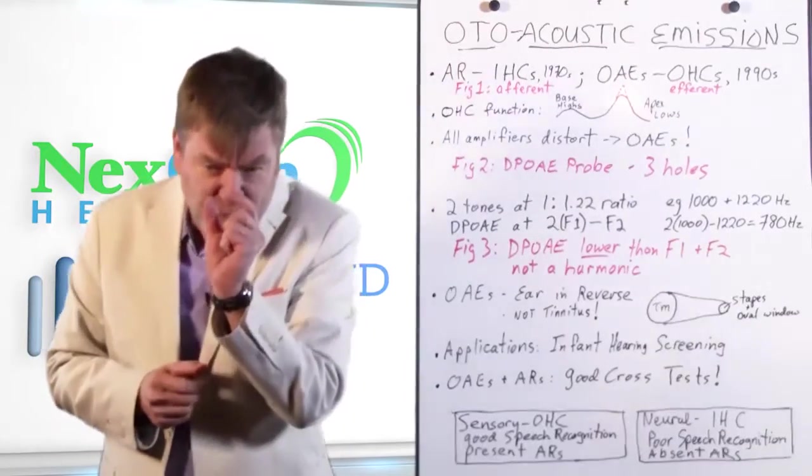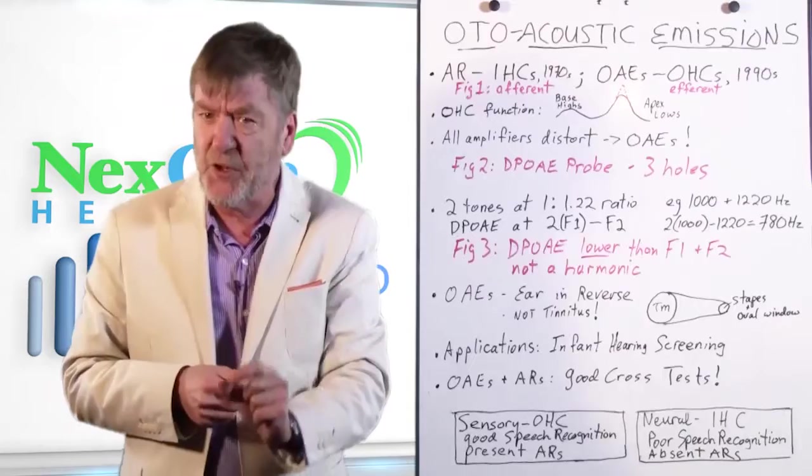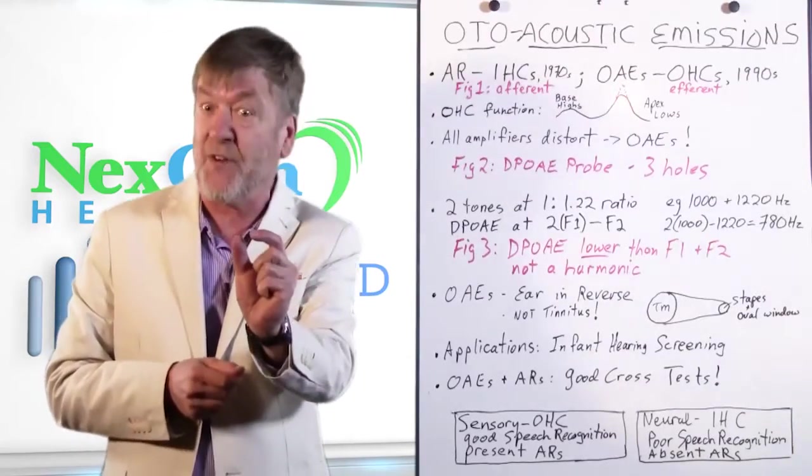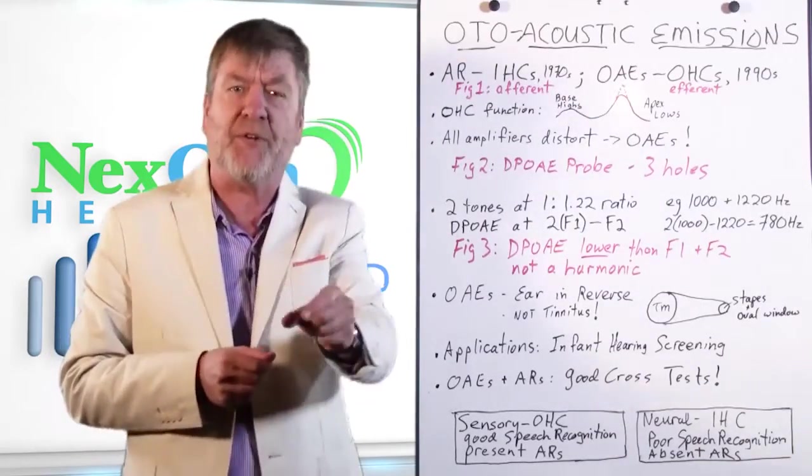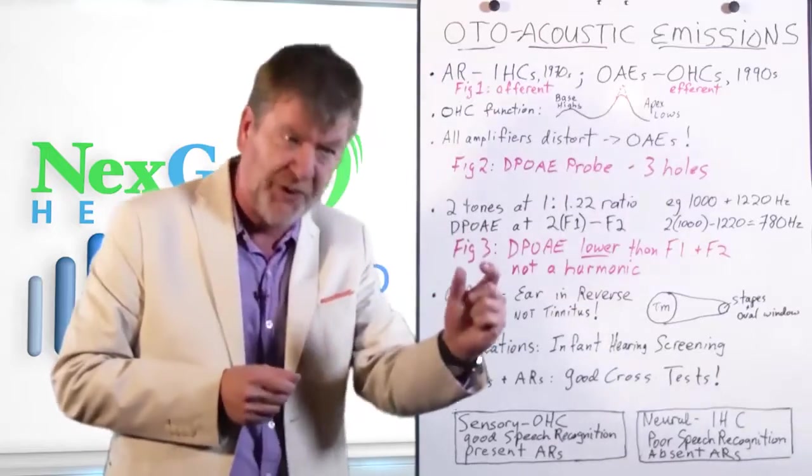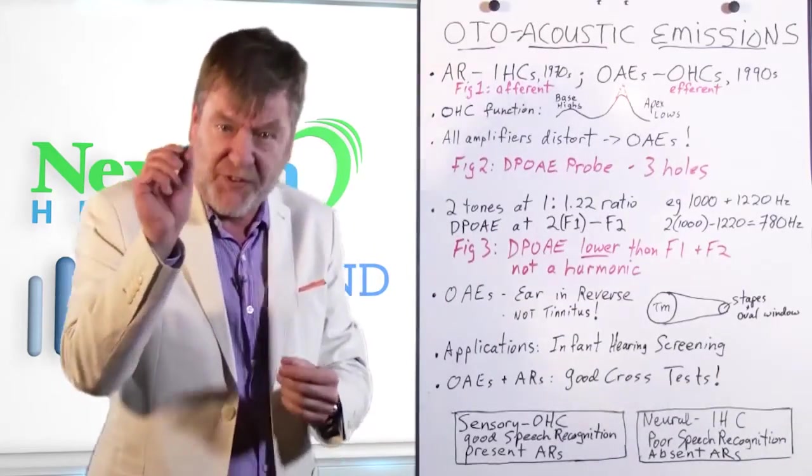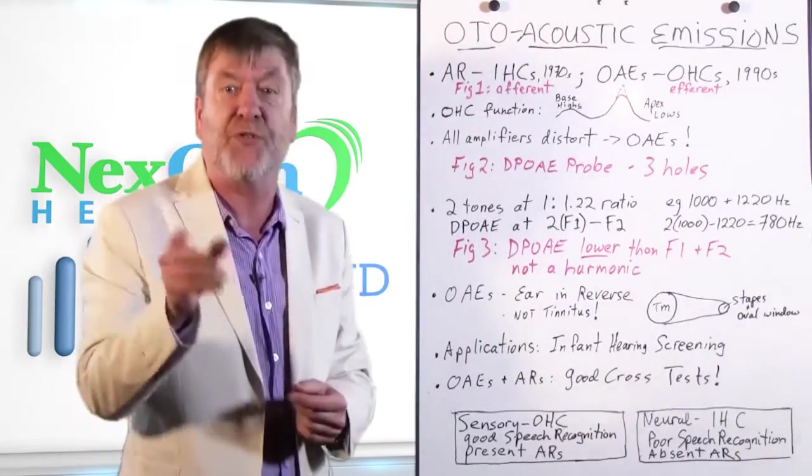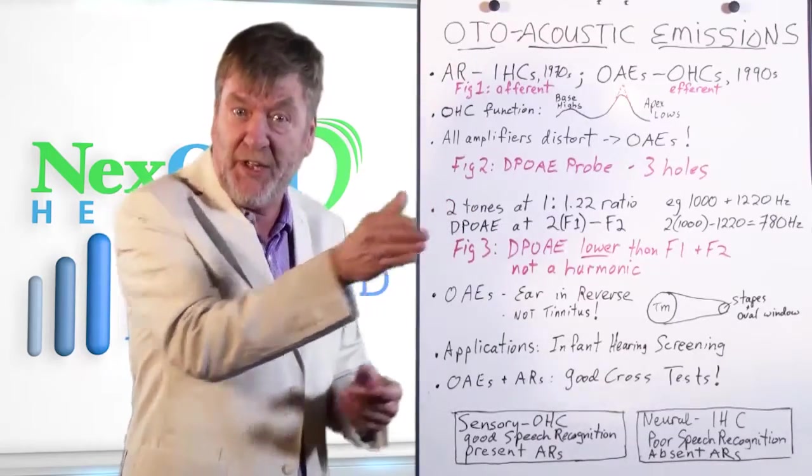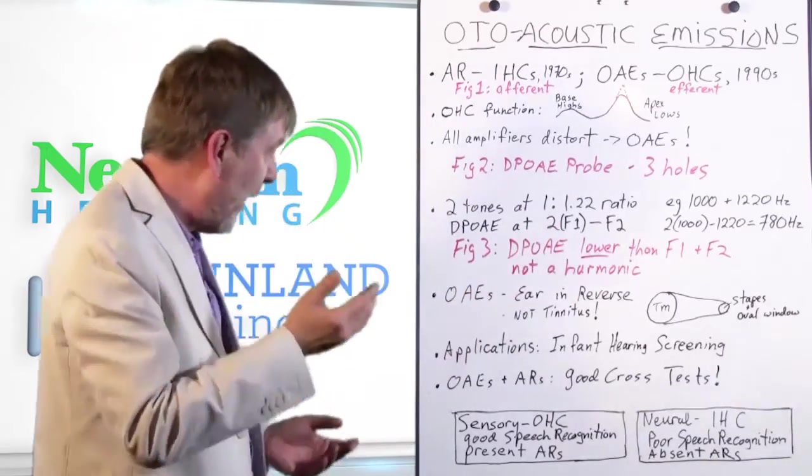What we do in audiology is we emit pairs of tones surrounding 250 Hz, pairs of tones around 500 Hz, pairs at around 1000, pairs at 2, pairs at 4. And in that way, we test the otoacoustic emissions resulting across the frequency range of human hearing. It's quite amazing.